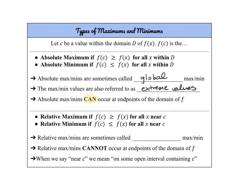So if you have a closed interval, you can have an absolute maximum at the endpoint. A relative max or min is when f of c is greater than or equal to f of x for all x values near c. For relative minimums, it's when that value is less than all the others for all x values near c. If you zoomed in around c, it would be a maximum or a minimum — it would look like an absolute maximum if you zoomed in far enough.